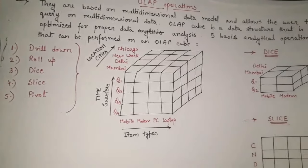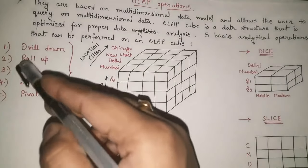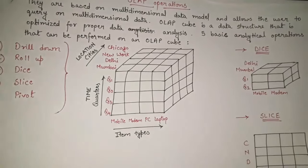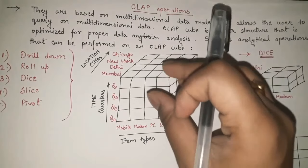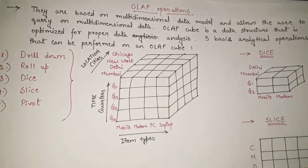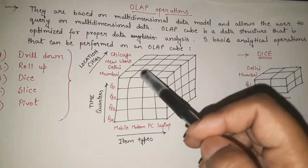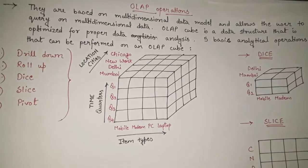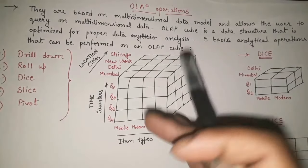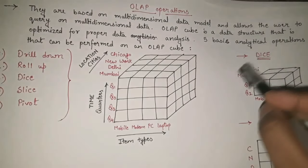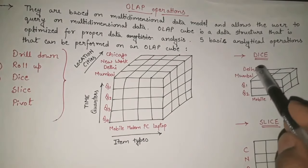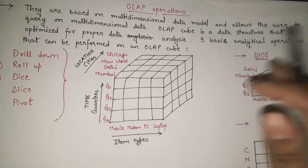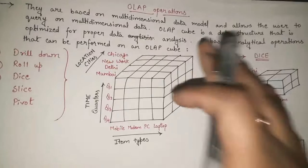The third operation is dice. Just like a dice in a board game, whenever we want any small part of the cube — any small piece of information — we extract it using the dice operation. For example, if a query asks for only the information regarding Delhi and Mumbai, for only quarters Q1 and Q2, and only regarding items mobile and modem, we pick up just that part of the cube. This smaller extracted cube is known as the dice operation.